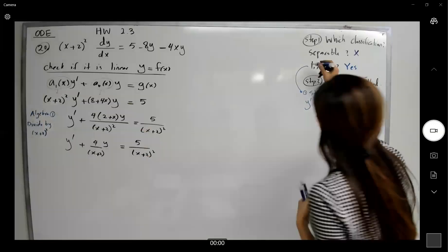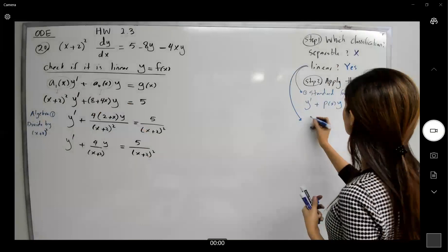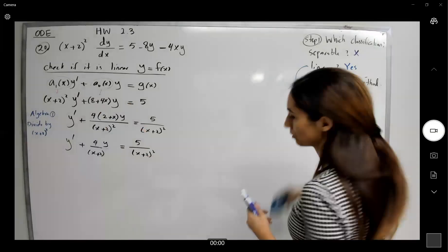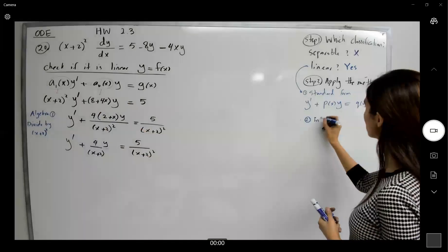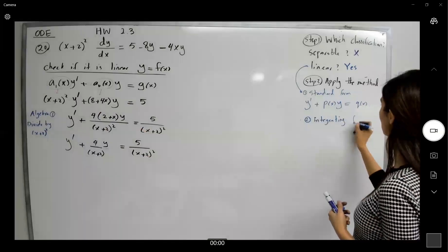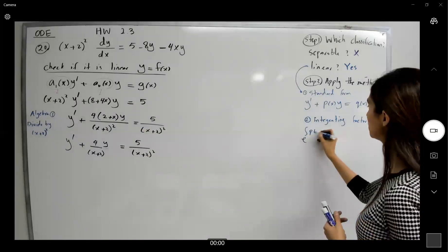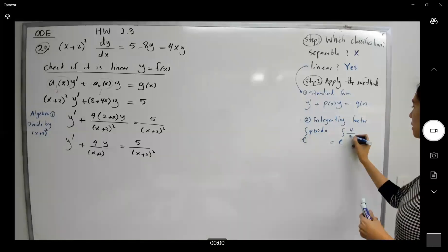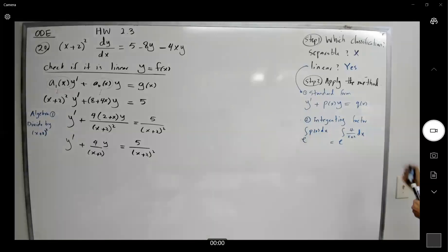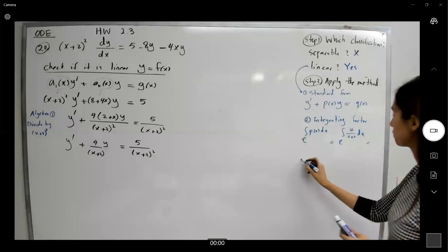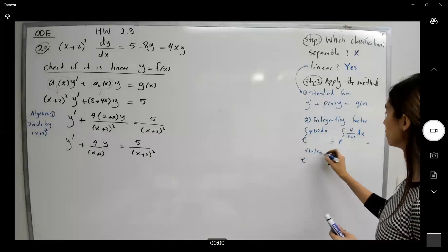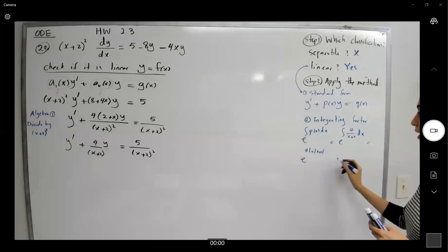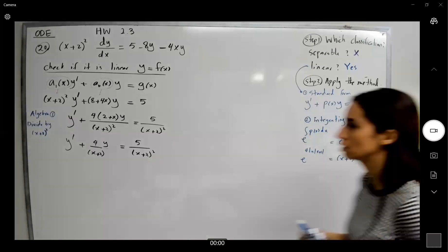The next step is to find the integrating factor, which is e to the integral of p(x) dx. That equals e to the integral of 4/(x+2) dx. This gives e to the power of 4·ln|x+2|. We can bring the 4 up as an exponent and cancel e and ln. So the integrating factor is (x+2)⁴.